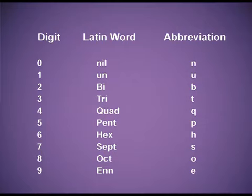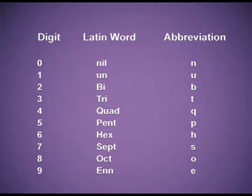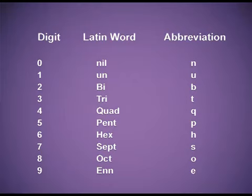The Latin word roots for the digits are as follows: for 0, the word is nil (abbreviation n); for 1, it is un (abbreviation u); for 2, it is bi (abbreviation b); for 3, it is tri (abbreviation t); for 4, it is quad (abbreviation q); for 5, it is pent (abbreviation p); for 6, it is hex (abbreviation h); for 7, it is sept (abbreviation s); for 8, it is oct (abbreviation o); and for 9, it is enn (abbreviation e).